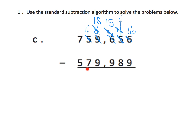Now I have four ten thousands take away seven ten thousands — that's no good, so I have to do some more regrouping. Instead of having seven in the hundred thousands, I'll only have six hundred thousands. I'm going to cash in that hundred thousands for ten ten thousands, so instead of having four ten thousands, I will now have fourteen ten thousands.